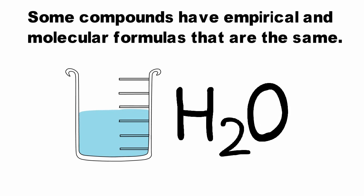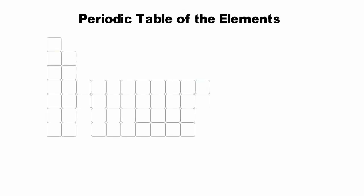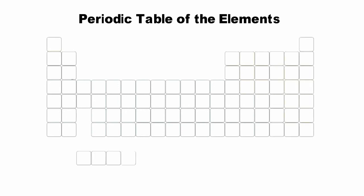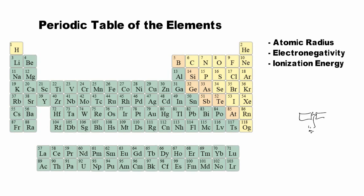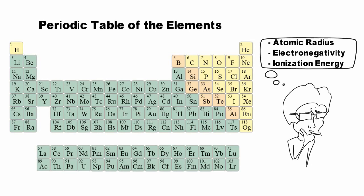The periodic table is organized to aid chemists in determining helpful information about elements such as atomic radius, electronegativity, and ionization energy. Learning this information and recognizing the periodic trends helps us to understand why elements combine in certain ways and have certain properties.